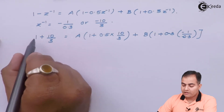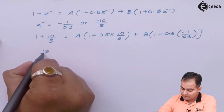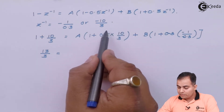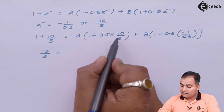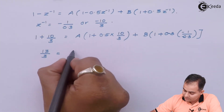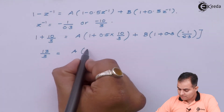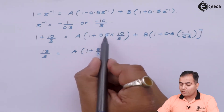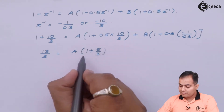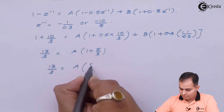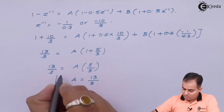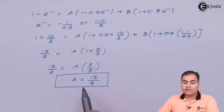From the equation 13/3 = A × 8/3, cross-multiplying gives 13 = 8A, so A = 13/8. Now substituting the values of A and B into equation number 1 gives the parallel form representation. The first part is H1(z) with A = 13/8 and the second part is H2(z) with B = -5/8.